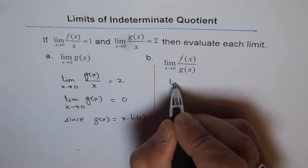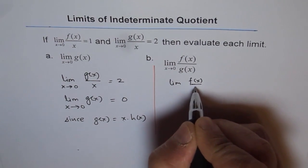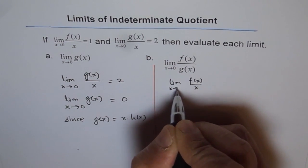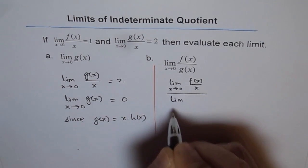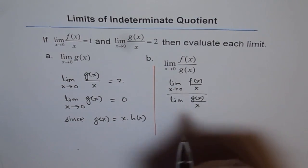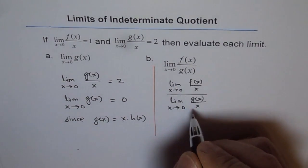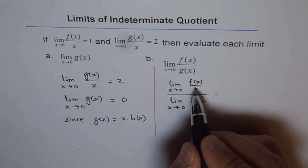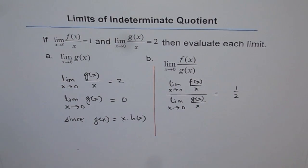we can find limit of f of x over x when x approaches 0, divided by limit of g of x over x when x approaches 0. Limit of this function is 1 and limit of this function is 2. So this is equal to 1 over 2.